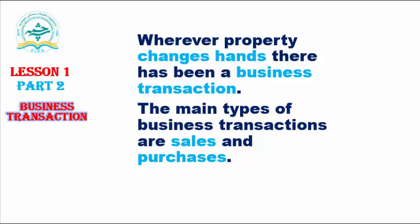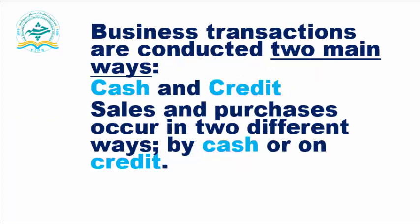Business transaction: wherever property changes hands there has been a business transaction — whenever you exchange properties there is a business transaction. The main types of business transactions are sales and purchases. Business transactions are also conducted in two main ways: cash and credit. That means sales and purchases occur in two different ways, by cash or on credit.